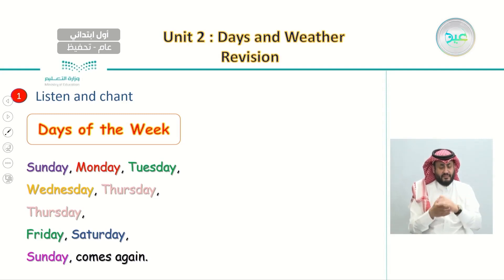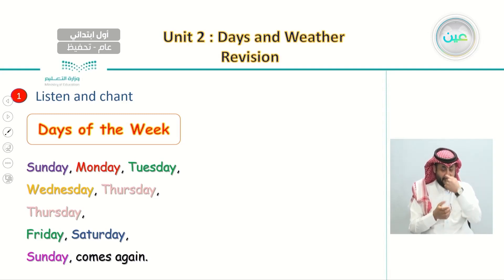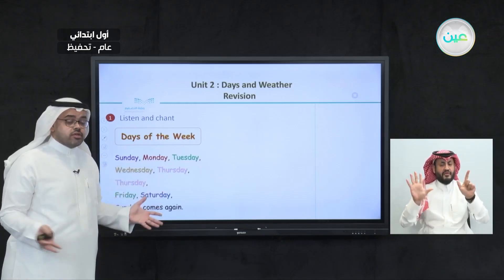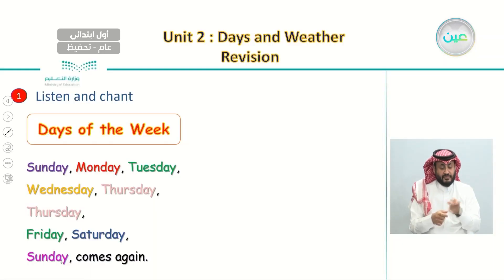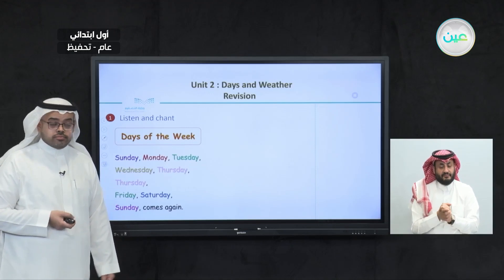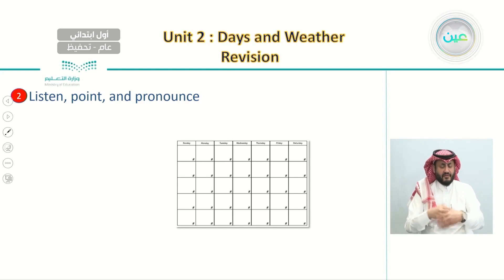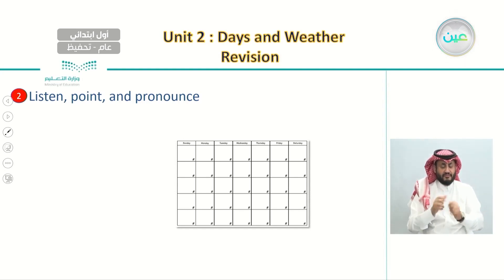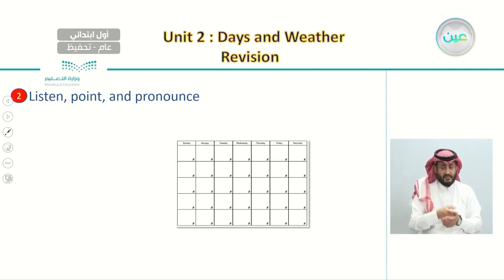Here we have the chant called 'Days of the Week.' Let's listen. In this chant, we said all seven days of the week, and when we reached the end, we said 'Sunday comes again,' meaning we start from the beginning of the week. After listening to the chant, we had an exercise where we looked at a calendar in the book showing days starting from Sunday, Monday, Tuesday, Wednesday, Thursday, Friday, and Saturday.